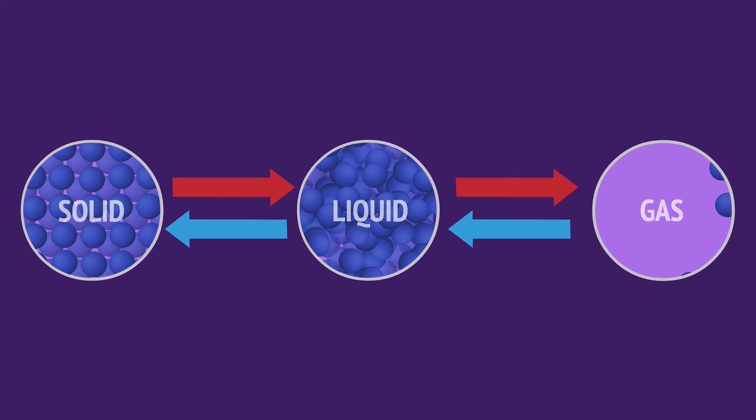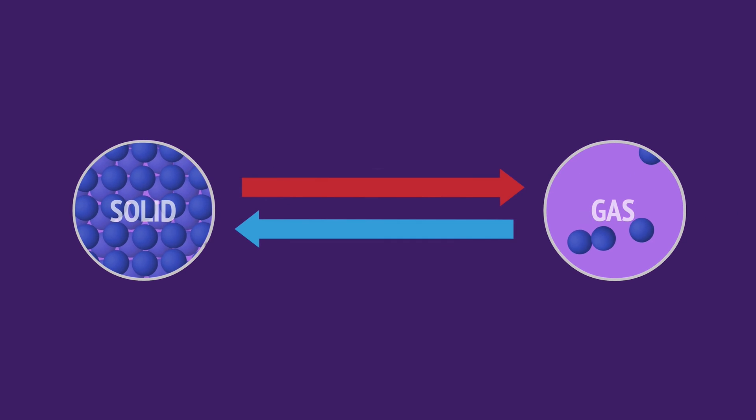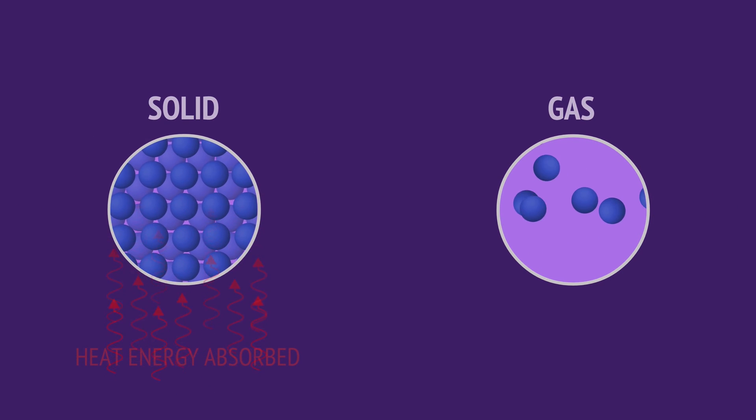Under certain conditions, substances can transition directly between the solid and gas state without passing through the liquid state. When a solid absorbs heat energy and transitions directly to a gas, we call it sublimation.